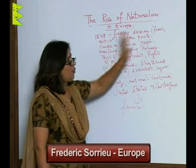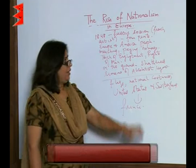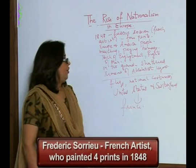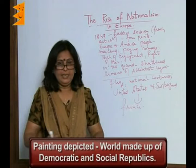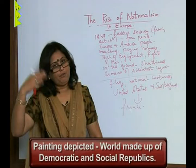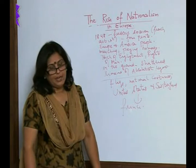Before we start with the chapter, we will talk about Frederick Soru's depiction of what was happening in Europe. Soru was a French artist who painted four prints in 1848, and here he tried to depict what people had seen, what had actually happened, and what they were looking forward to. This was a beautiful first print that Soru painted.